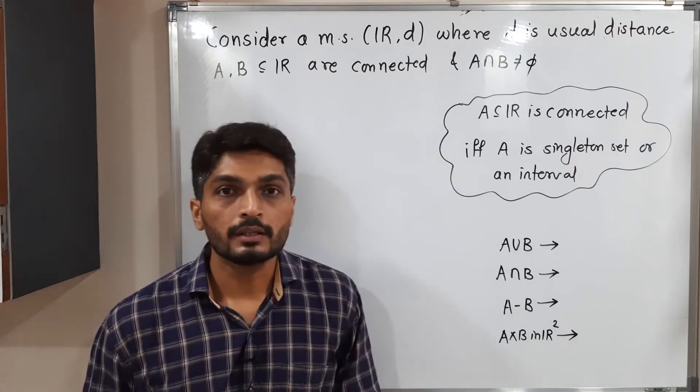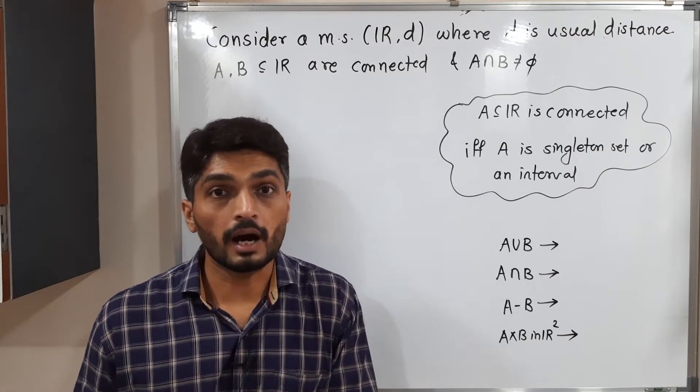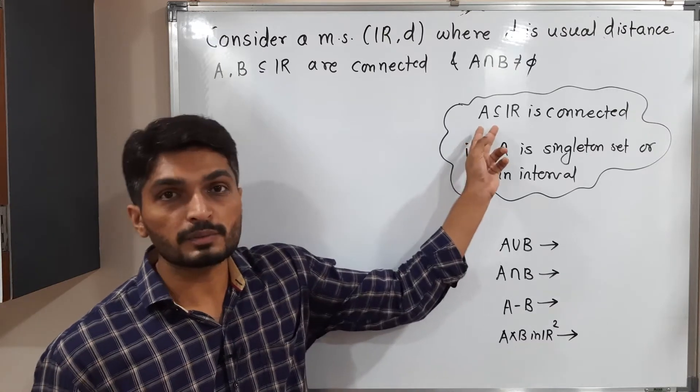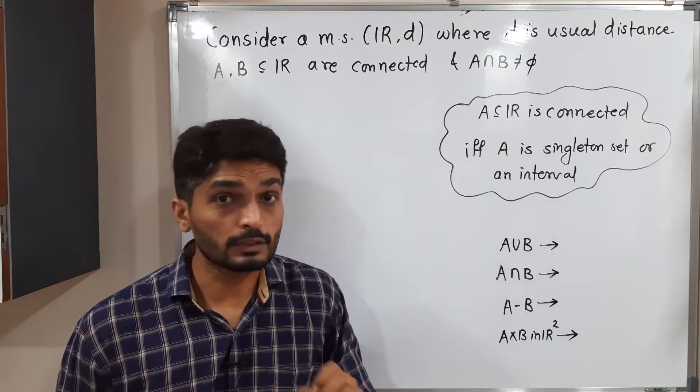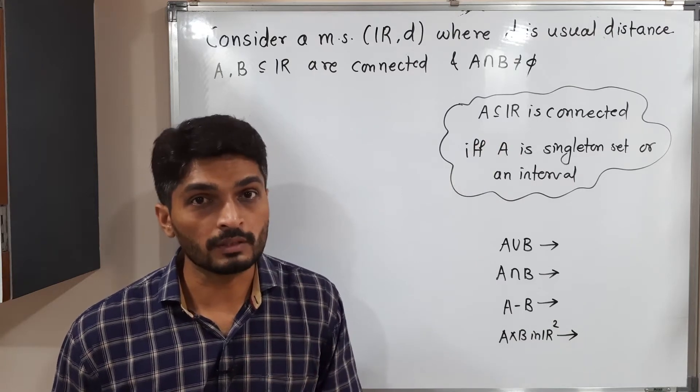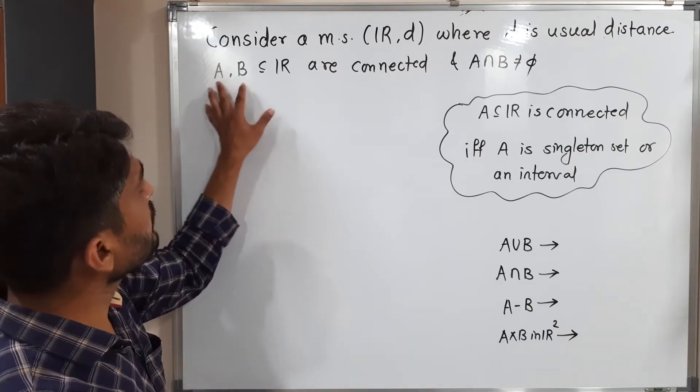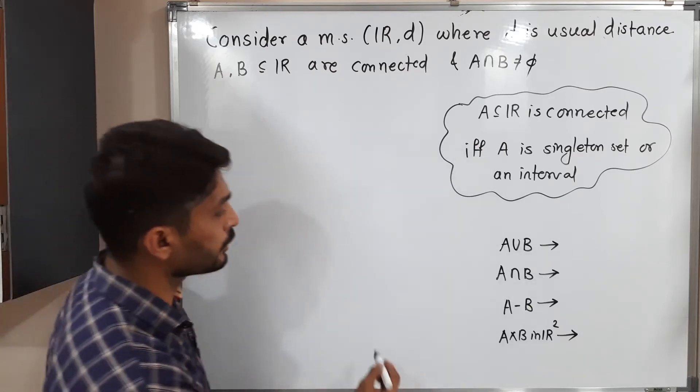This is a very important result for a connected set in R with usual distance. In R, a subset of R is connected with usual distance if and only if it is either a singleton set or an interval. So what we have: A and B are connected sets, intersection is non-empty.